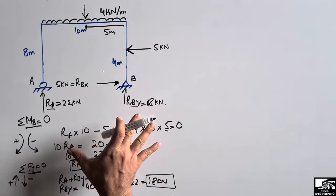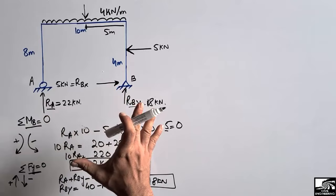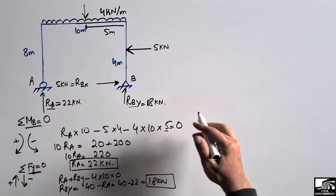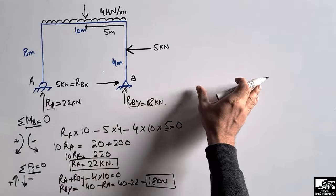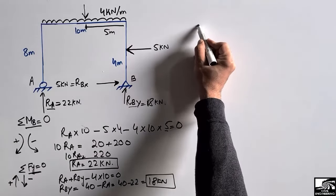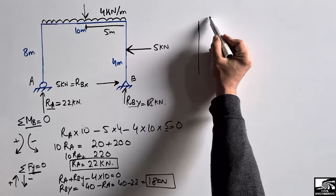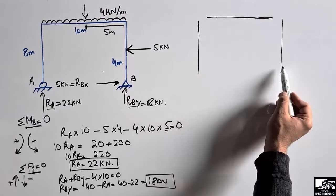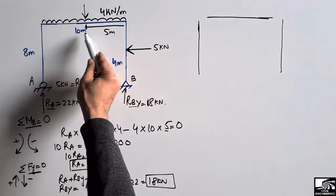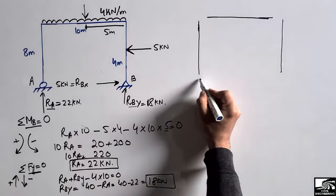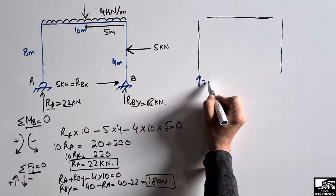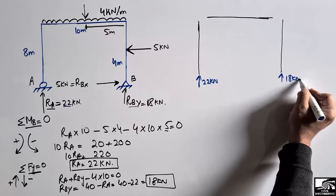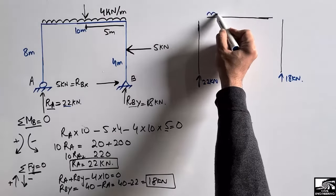Now that we have the support reactions, we draw the free body diagram for the frame. The free body diagram consists of the two columns and the beam. The support reactions are: 22 kN at point A, 18 kN vertical and 5 kN horizontal at point B. The beam carries the 4 kN/m uniformly distributed load.